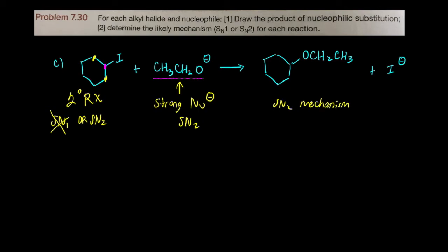I'll go ahead and draw the curved arrow reaction mechanism. The oxygen is nucleophilic. It is going to, in one step, smack into this substrate from the backside kicking off the iodide. That's how you would draw the curved arrow reaction mechanism for that.